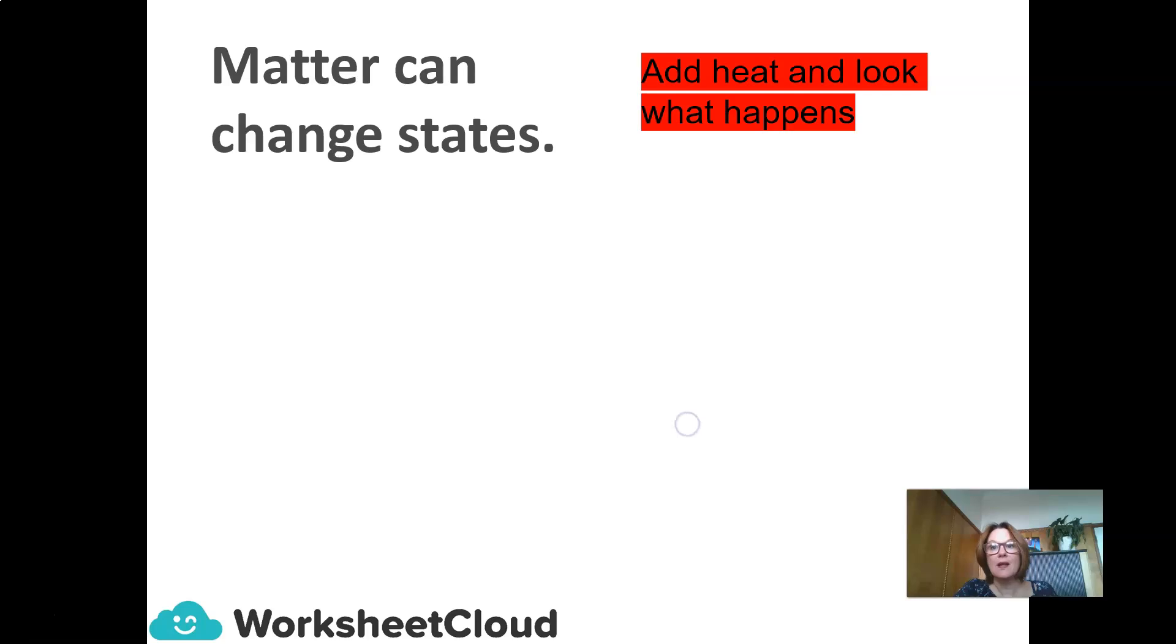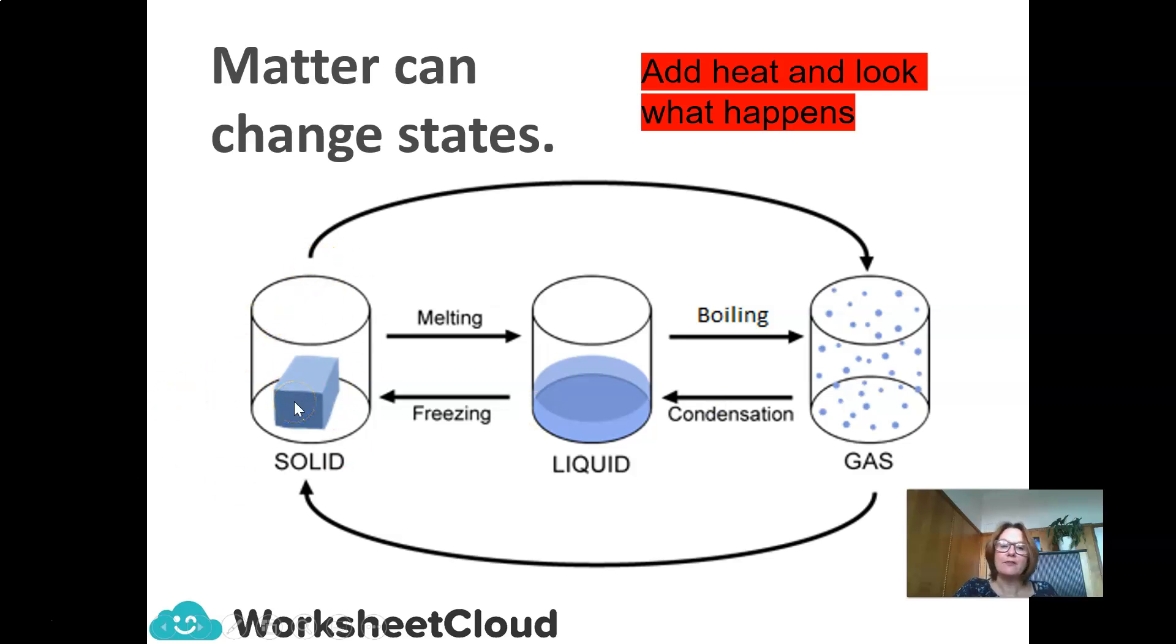Matter can change states. Let's add heat and take a look at what happens. Here we have a solid. If we add heat to a solid, it goes through the process of melting and changes to a liquid. If we add heat to this liquid, it goes through the process of boiling and changes to a gas. Exactly the same happens in the opposite direction, the reverse process. In a gas, we are now going to cool it. Through the process of condensation, the gas is going to change form back to a liquid. If we then cool the liquid, it will go through the process of freezing and change to a solid.